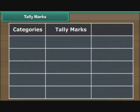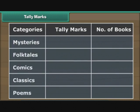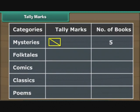Now let us organize Ravi's data with the help of tally marks. Make three columns: categories, tally marks and number of books. Write down the five different categories under the categories column. Draw a vertical line against the mysteries category under the tally marks column for the first book in the category. Draw a horizontal line for the next book in the same category. Draw a vertical line for the third book, a horizontal line for the fourth book and complete the rectangle. Represent the fifth mystery book with a line drawn between two opposite ends of the rectangle.